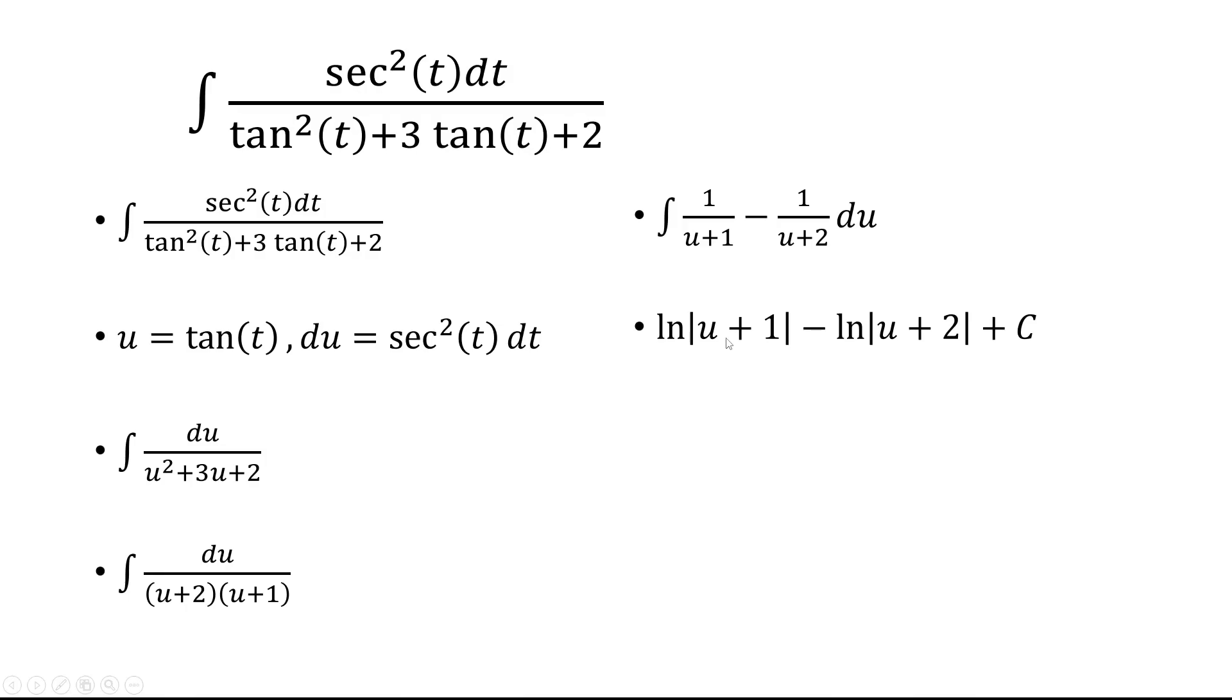We're going to use a log property, so we're going to bring this under one log. That's ln of u plus 1 over u plus 2.